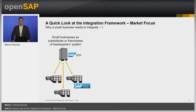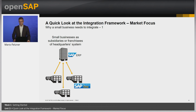All these businesses can connect to the integration framework. Some small businesses may be part of the supply chain for another business and might need to conform to data interchange standards. Tight integration would be needed to ensure that whenever a sales order is generated on the main business, a purchase order is also sent electronically to the supplier to order the goods needed to fulfill the sales order. This involves the exchange of transactions between the two systems.